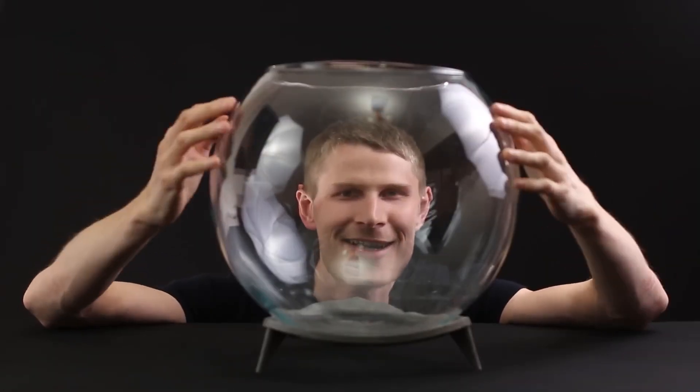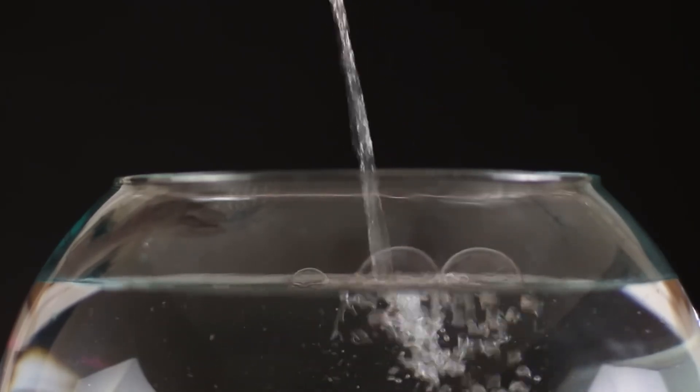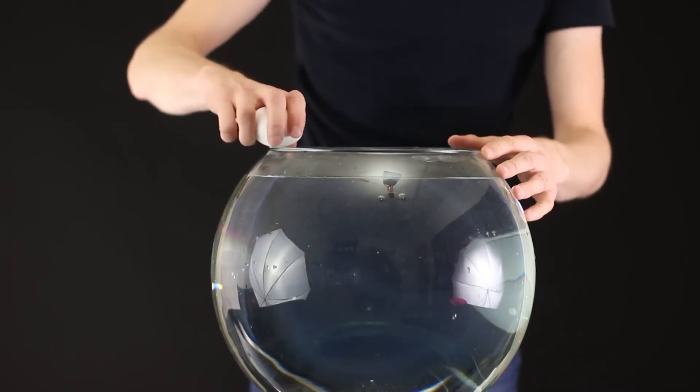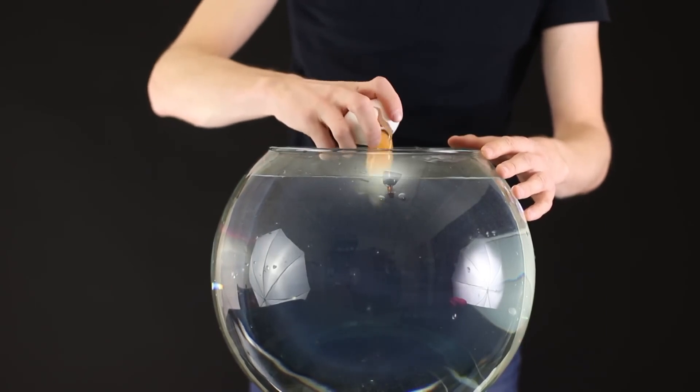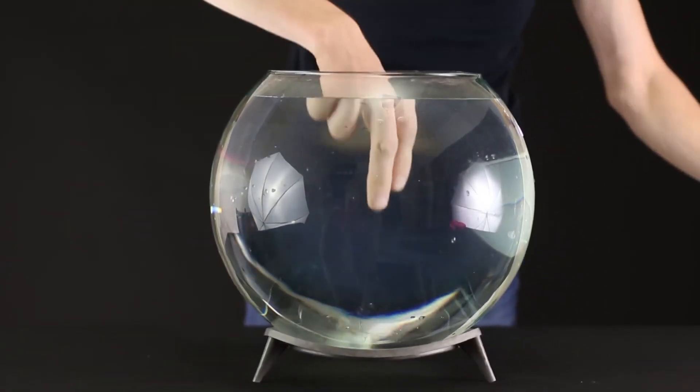For the next experiment, I got this aquarium. How's the view? Fill the aquarium with water almost to the edge. And now, we break the raw egg inside. It immediately goes to the bottom, but it's not as simple as that.